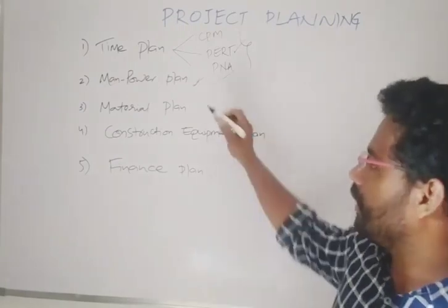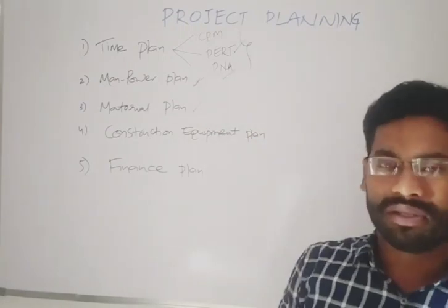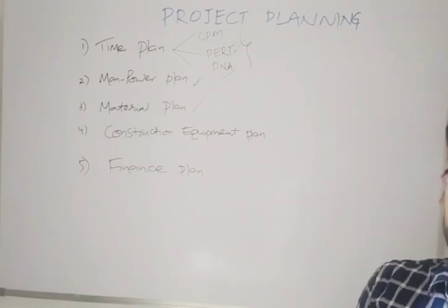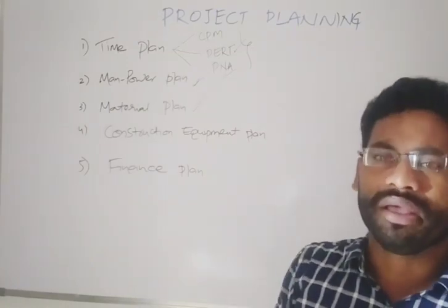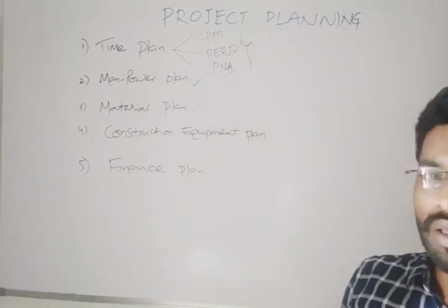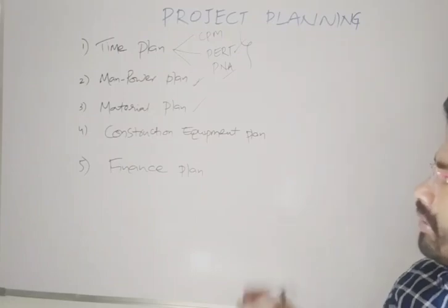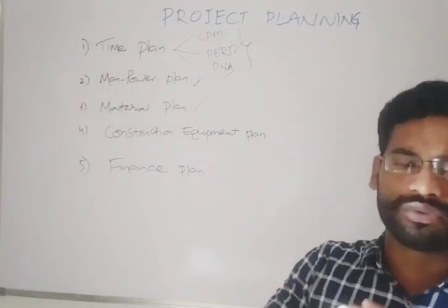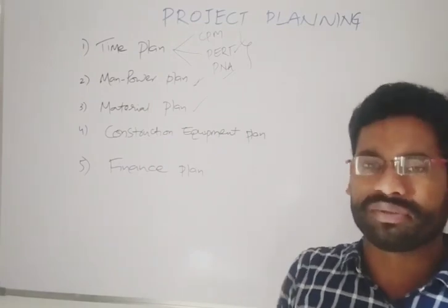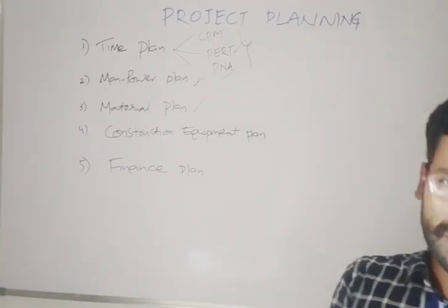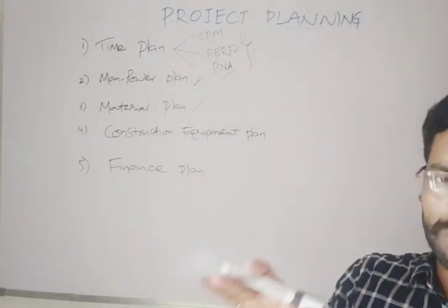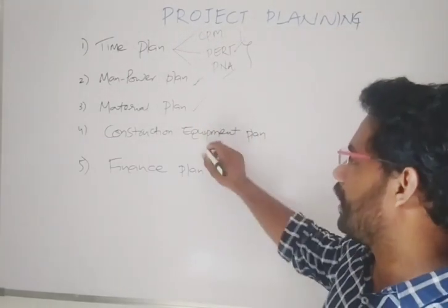Coming to the material plan — while you are constructing a project or building, you are going to purchase materials such as sand, cement, and bricks. Planning all of these is called the material plan. In the material plan, you have to find out the plan to optimize costs.